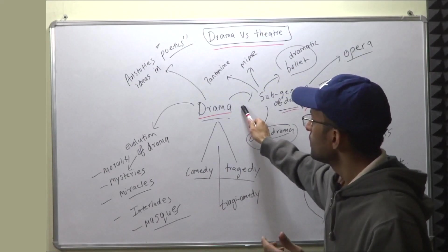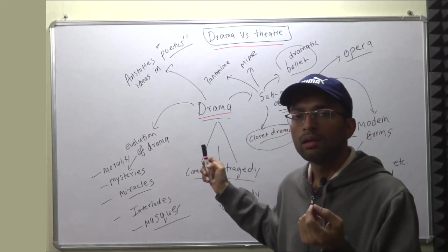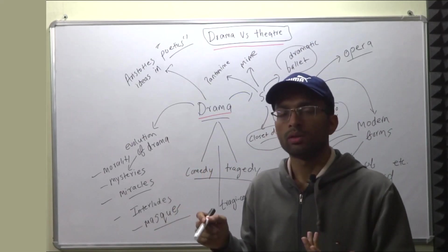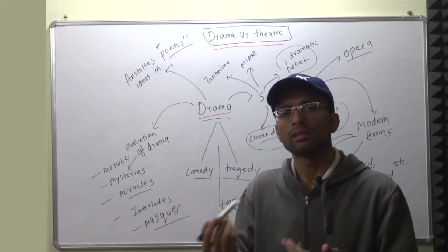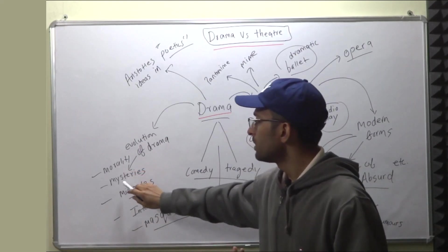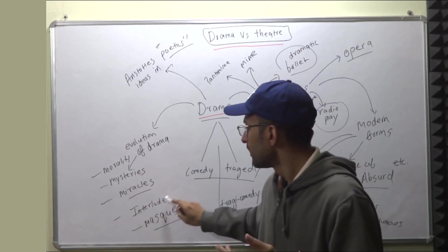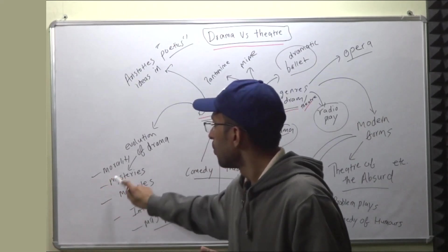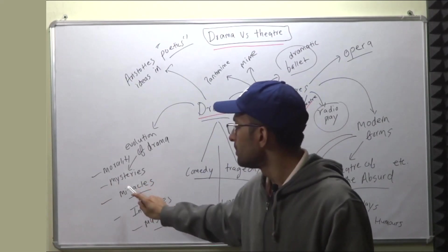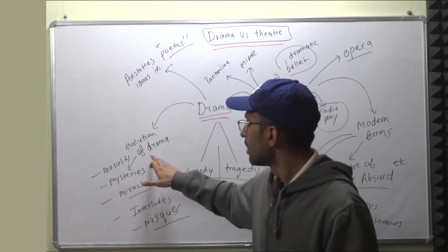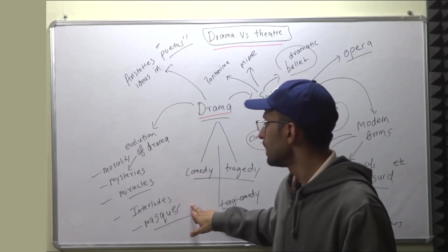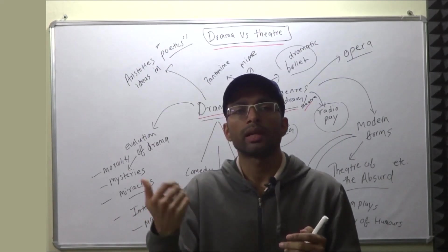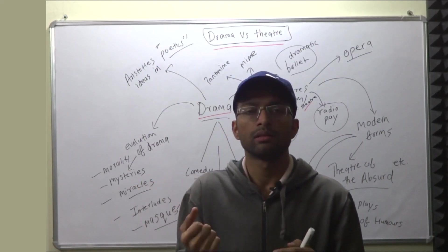When we start with Drama, the first thing you should do is talk about the evolution of Drama — how English Drama evolved, because mostly we are dealing with British and English literature. It began with Moralities, Mysteries, and Miracles. Then there is also something called Interludes and Masks. You should know the difference between Morality Play, Miracle, and Mystery, as well as the difference between Interlude and Masks. You should also know what was the first tragedy and the first comedy written in English.